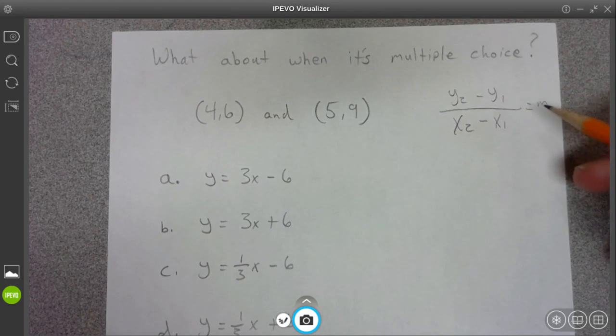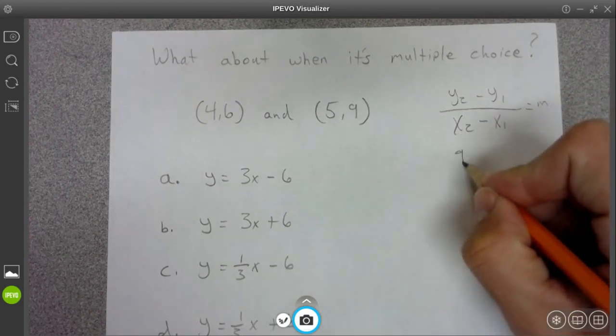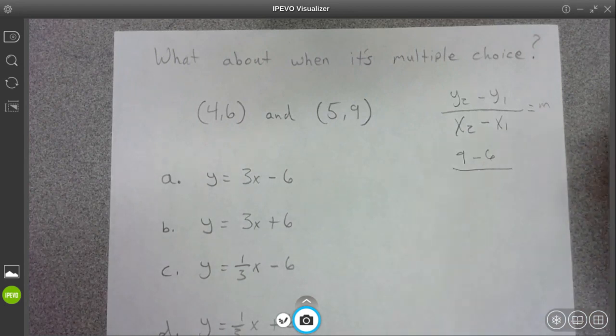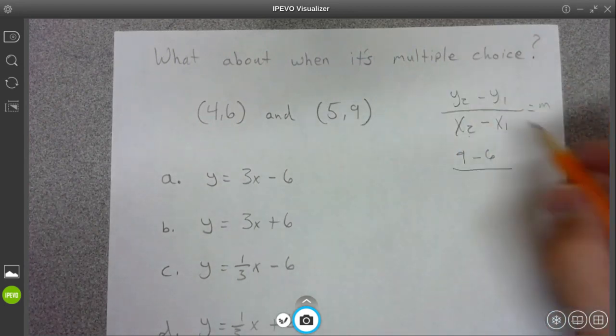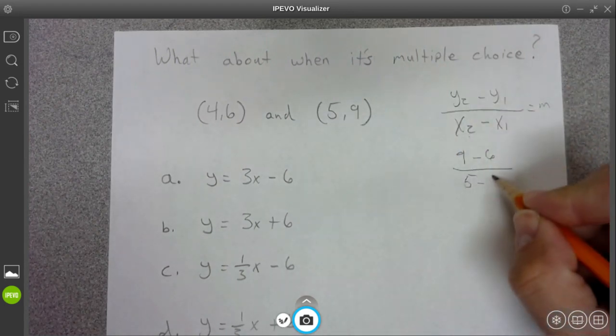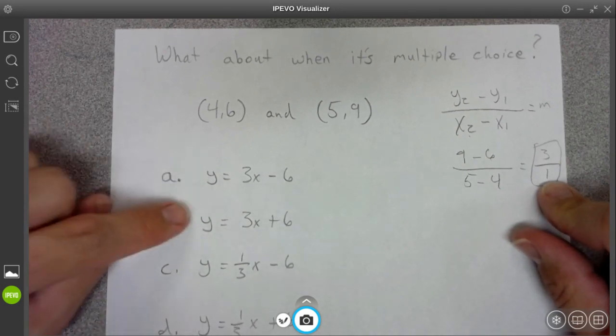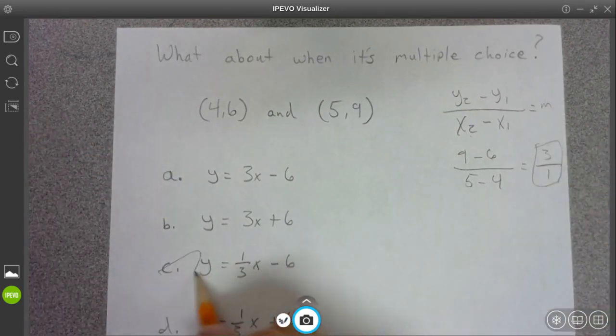Alright, let's do this first. y2 is 9, y1 is 6, over x2 is 5, and x1 is 4. Alright, so you get a 1 on bottom, 3 on top. So your slope is 3. So it's got to be either a or b.